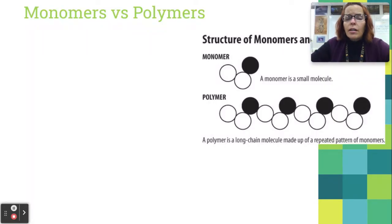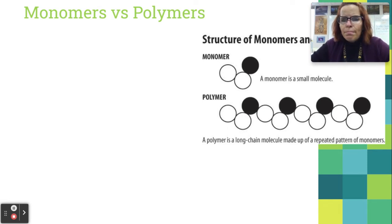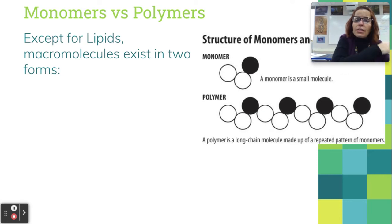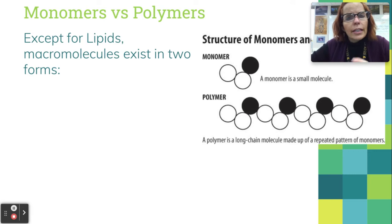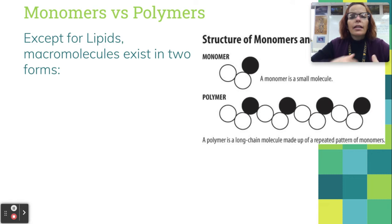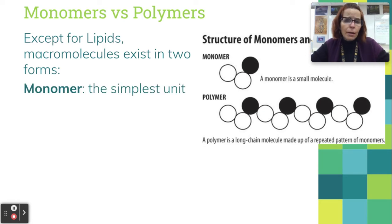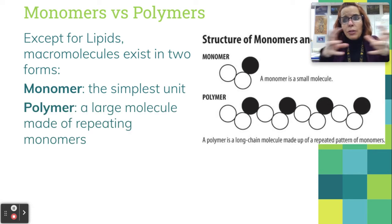Let's talk about building these big molecules, using the words monomer and polymer. The prefix mono means one and poly means many. Monomers are the building blocks — the small things. You put a whole bunch of them together to get the polymer. I often make a comparison to bricks and a building: bricks are the monomers, and the building made of all those bricks is the polymer. Other than lipids, all the other macromolecules have both monomers and polymers. Lipids don't.